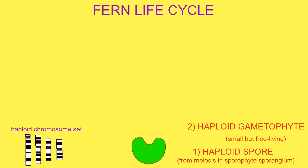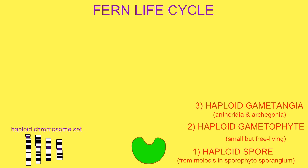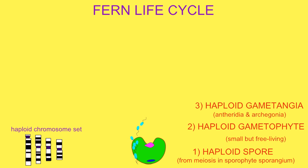This gametophyte, however, is rather small, typically only a few millimeters in size. The gametophyte individuals develop gametangia, the archegonia, and antheridia. Because the gametophyte is so small, in many cases an individual fertilizes itself.